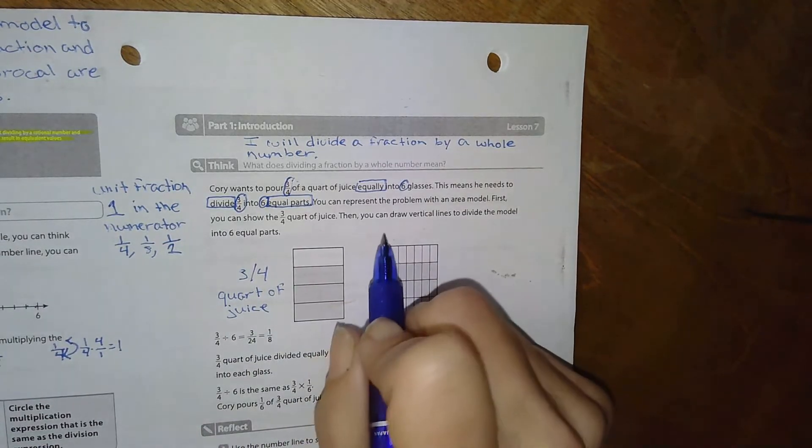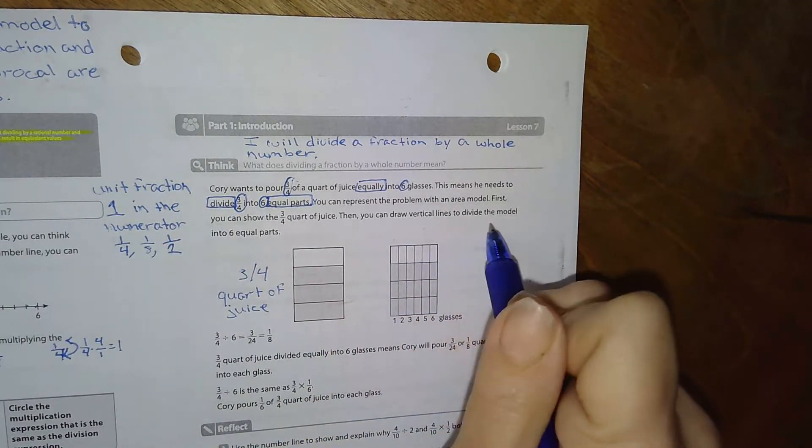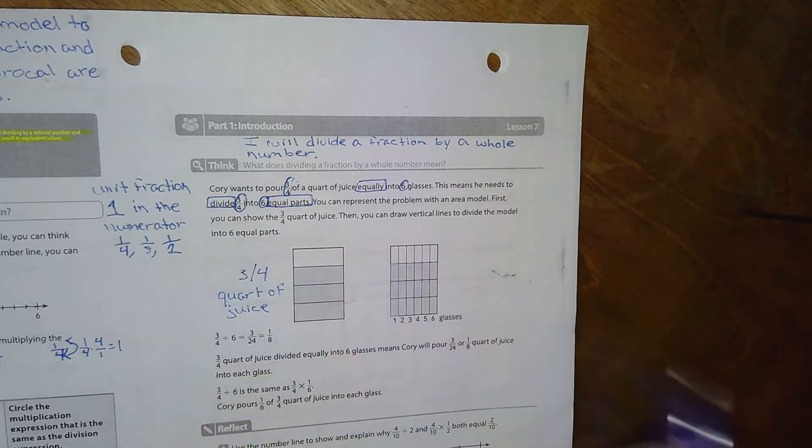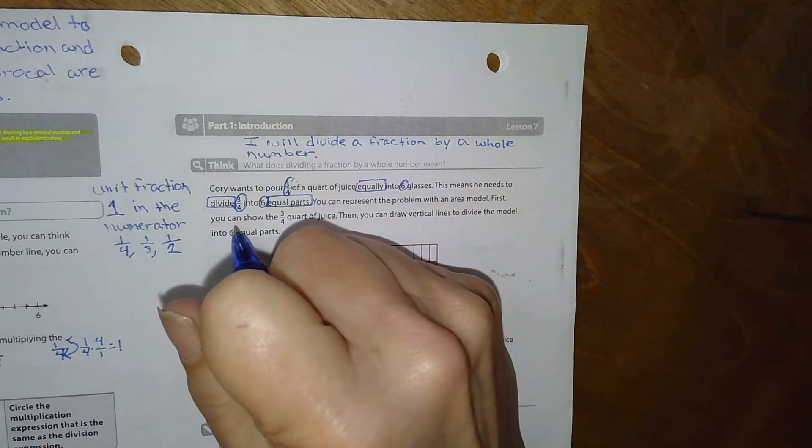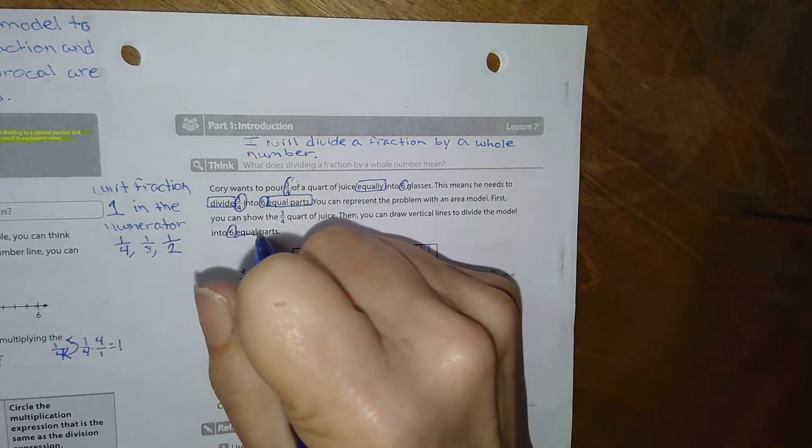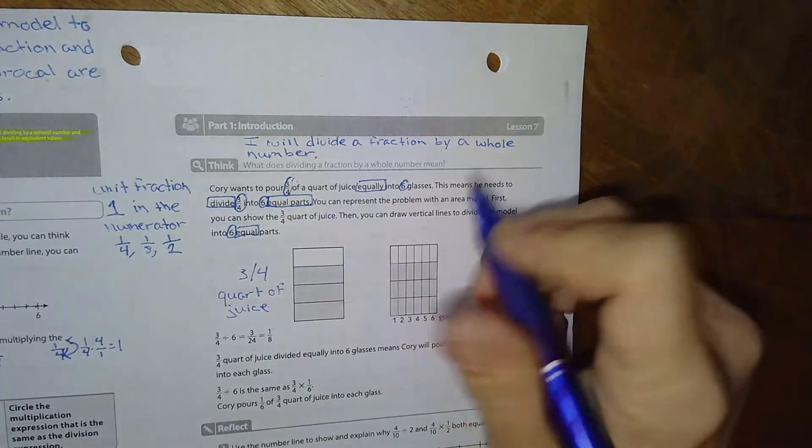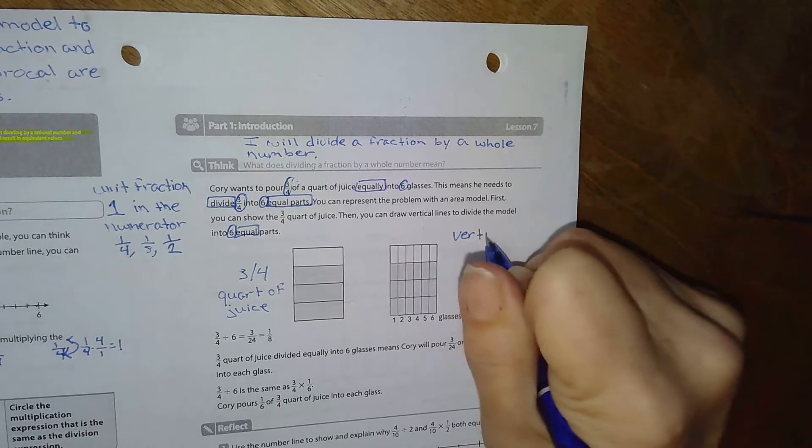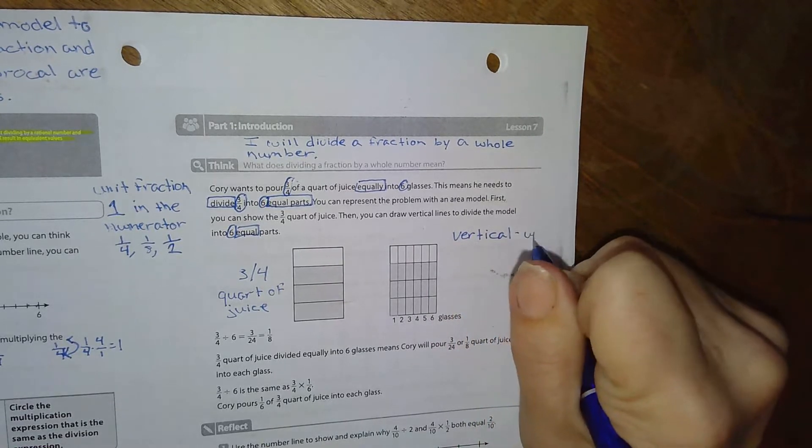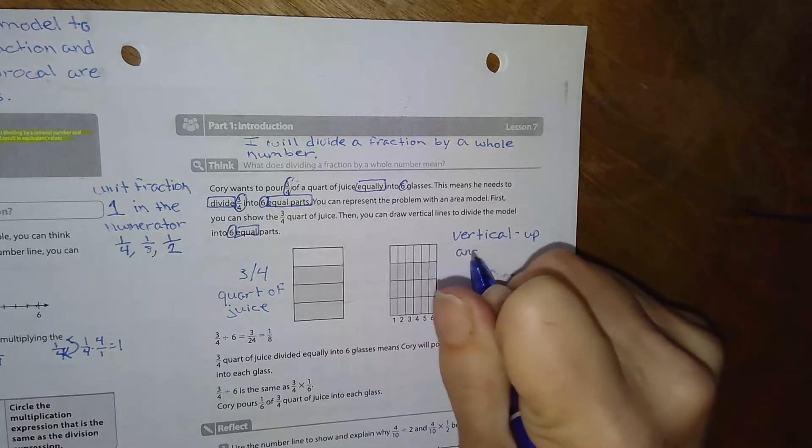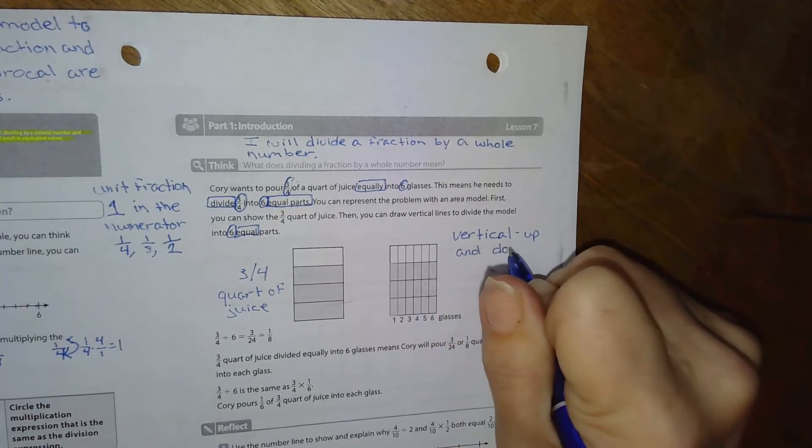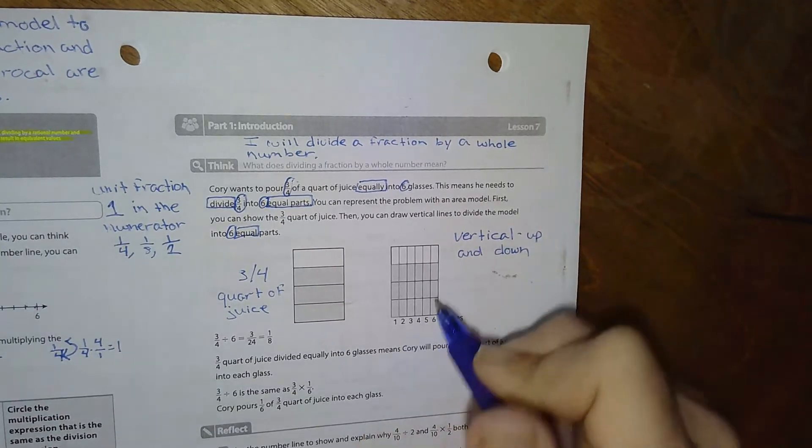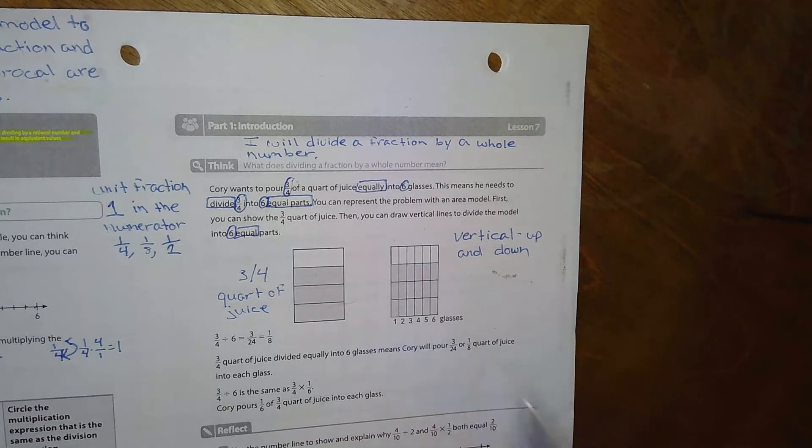Okay, then you can draw vertical lines to divide the model into six equal parts. So vertical is up and down, right? And here's the six lines, okay?